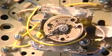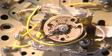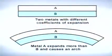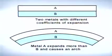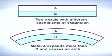Thermostats are typically manufactured with either a bimetal element or a remote bulb. The bimetal thermostat is made up of two dissimilar metals that are bonded together. They expand and contract at different rates, causing the bimetal disk or strip to flex, which causes electrical contacts to either open or close.